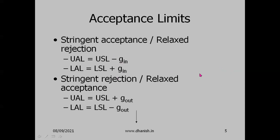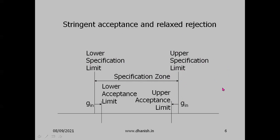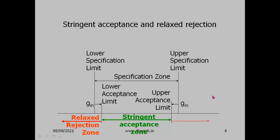Graphically, for stringent acceptance (relaxed rejection), the guard band is inside the specification zone. The upper and lower specification limits are reduced by an amount equal to the guard band — expressed as a percentage of the expanded uncertainty — to obtain the lower and upper acceptance limits. The specification zone is effectively reduced by the guard band to get the stringent acceptance zone.